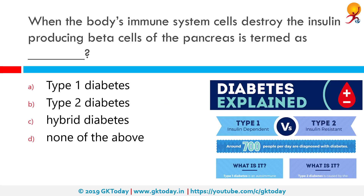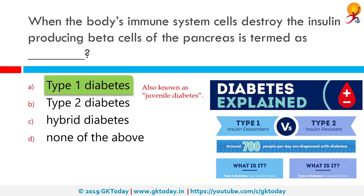When the body's immune system cells destroy the insulin-producing beta cells of the pancreas, it is termed as Type 1 Diabetes. Diabetes mellitus type 1 is a form of diabetes in which very little or no insulin is produced by the pancreas. Before treatment, this results in high blood sugar levels in the body.